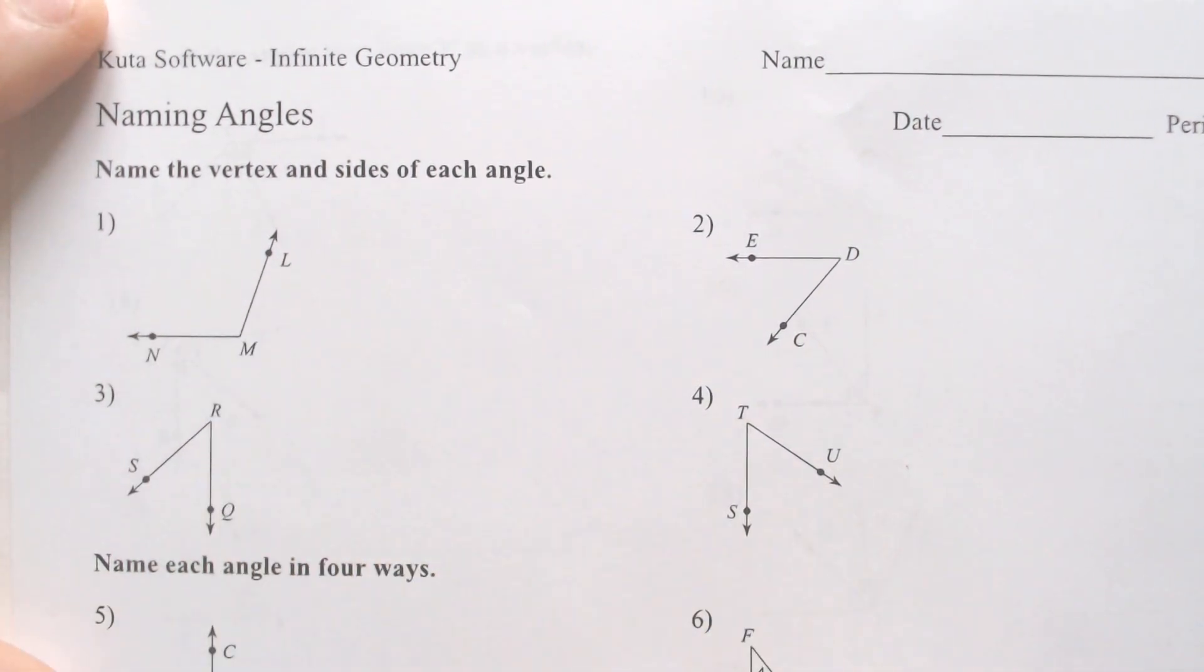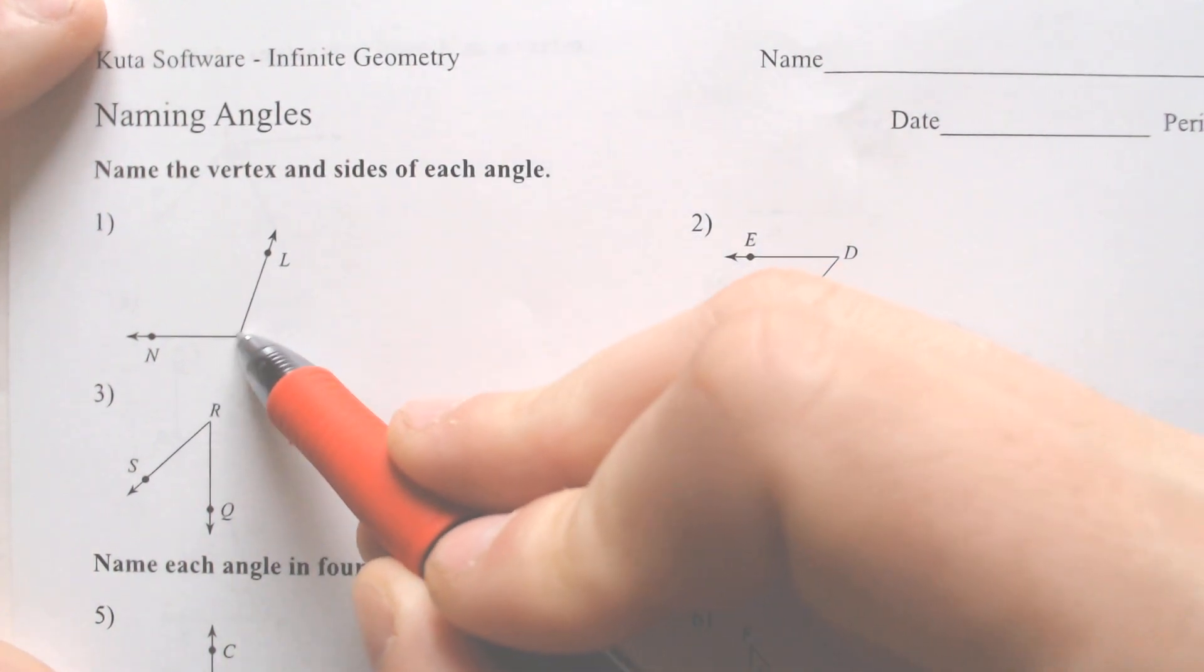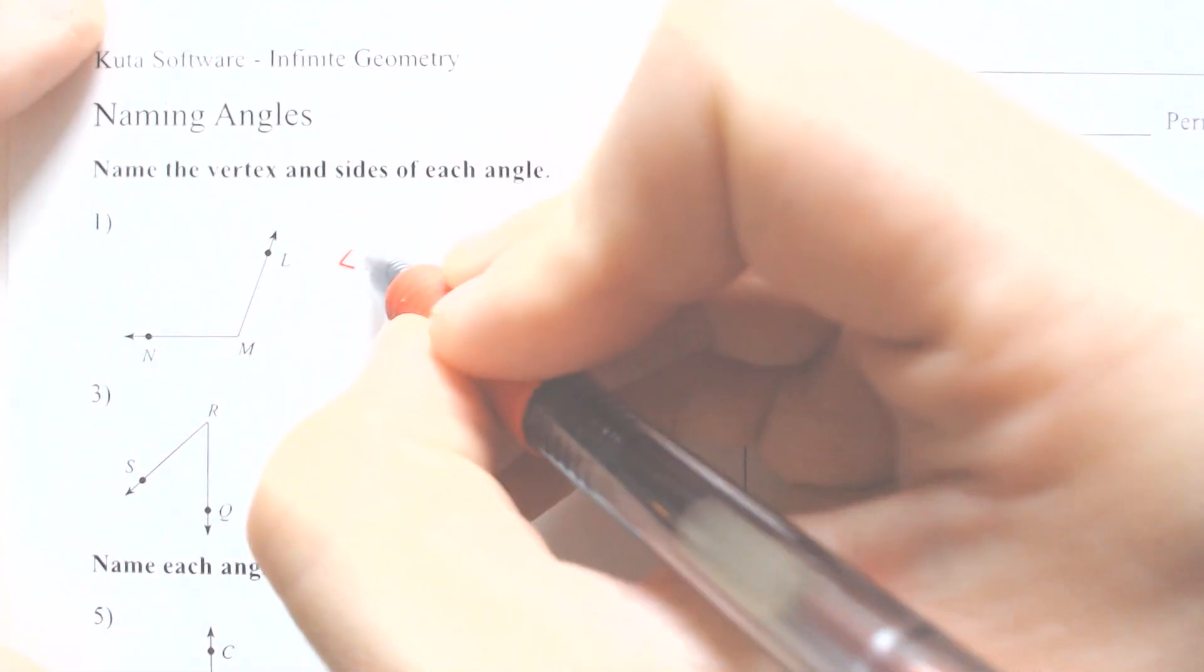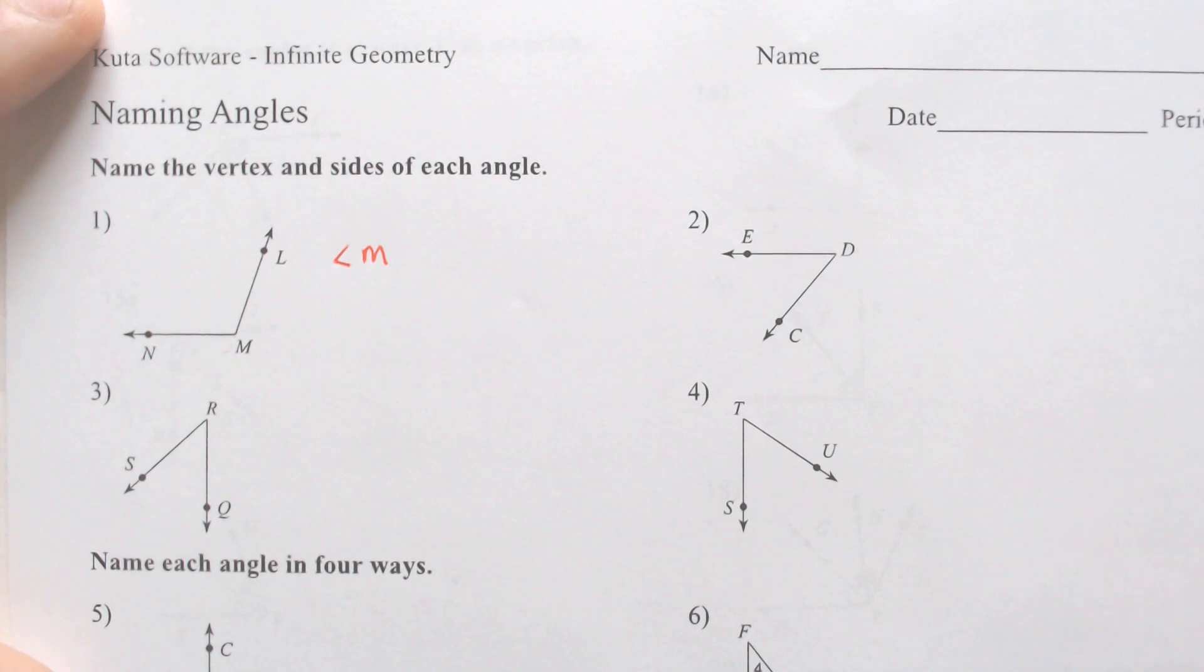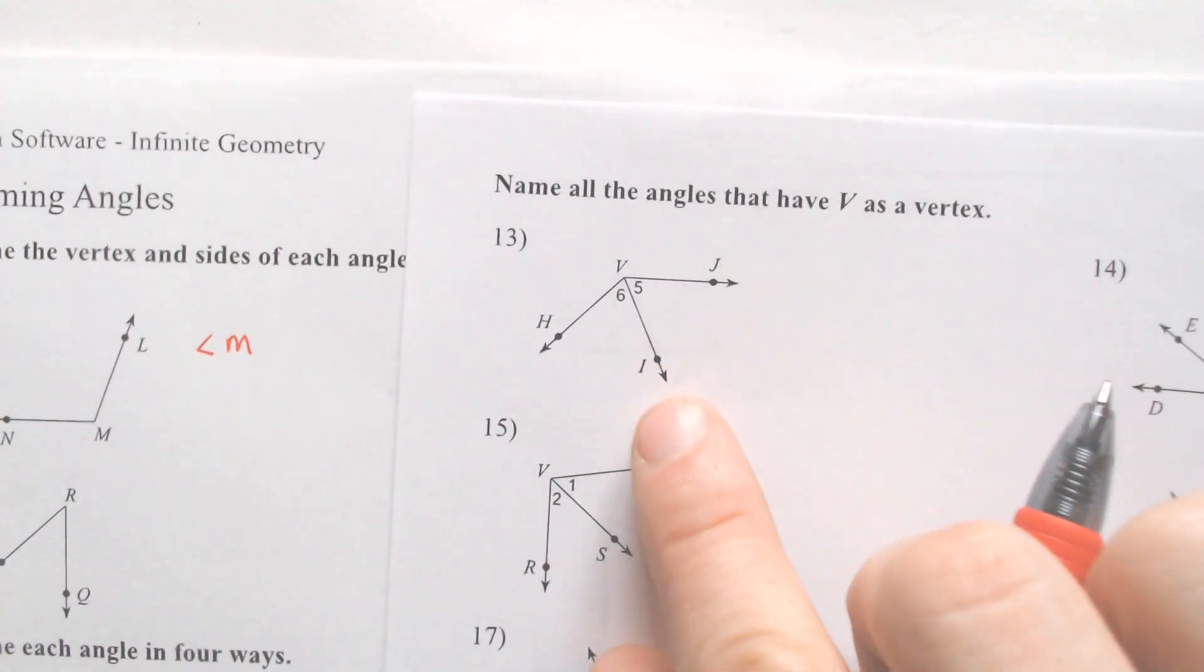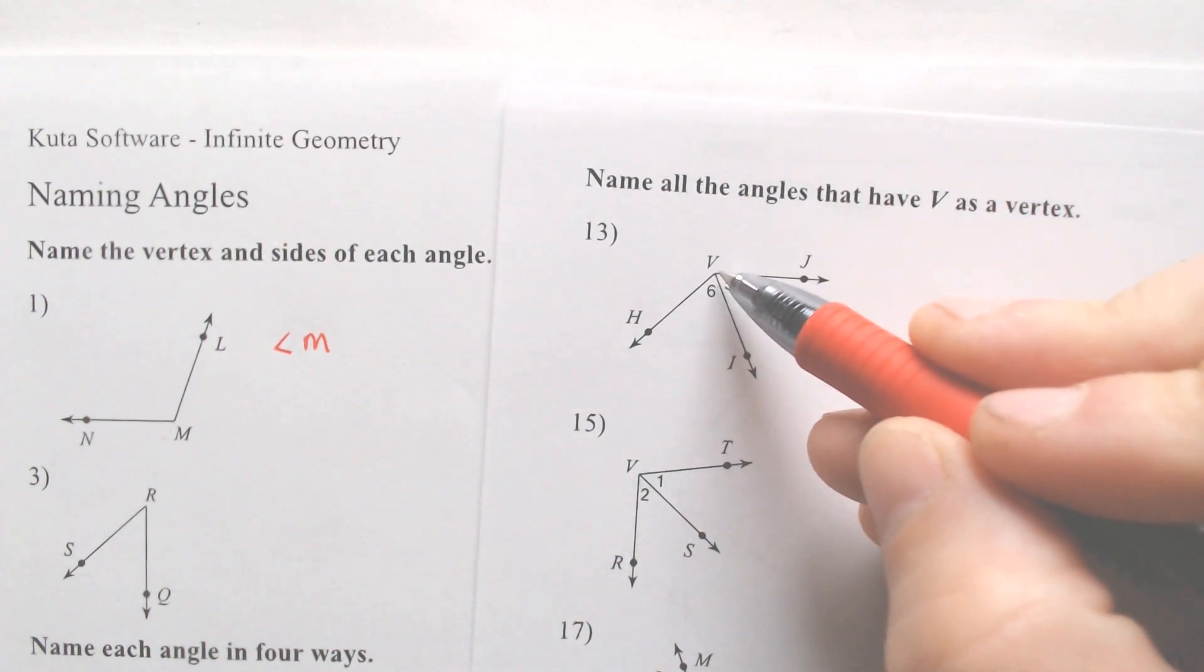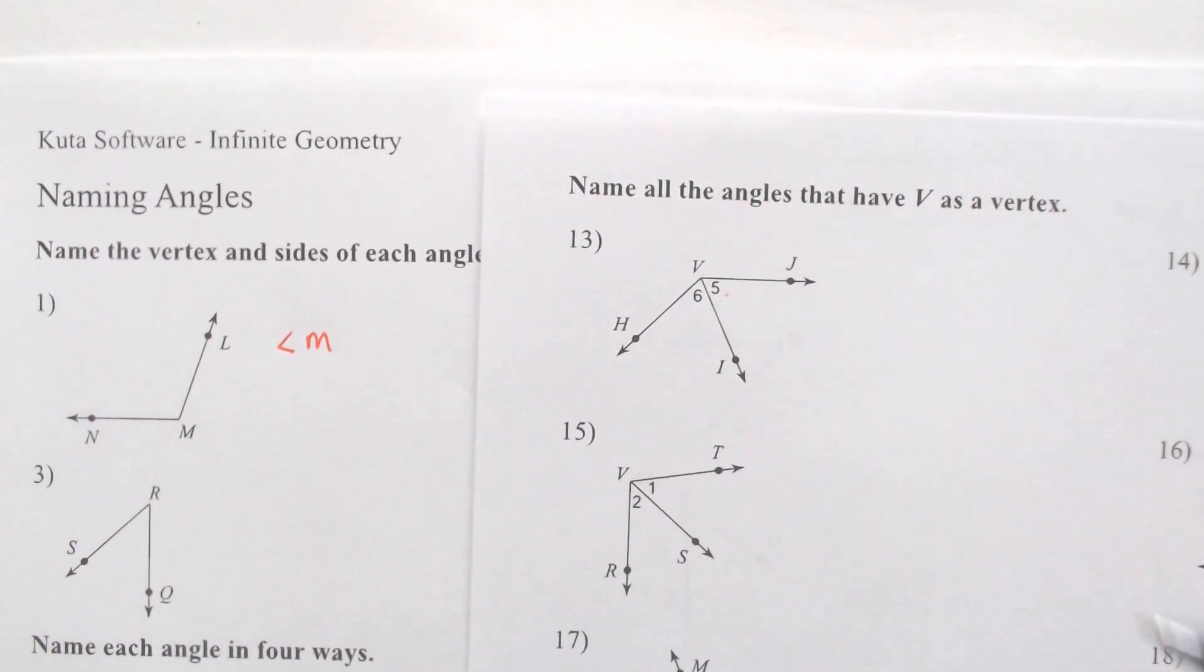So if we're naming the angle, there are two things that you can actually name an angle if it only has the two rays forming it. In this case, you could call it angle M, and you could spell out the word angle if you wanted to, but you can only do that if it is the only angle there. I could not do it here on my number 13 because see how the V is right here, and we have angle 5 and angle 6, so you couldn't call this just angle V.